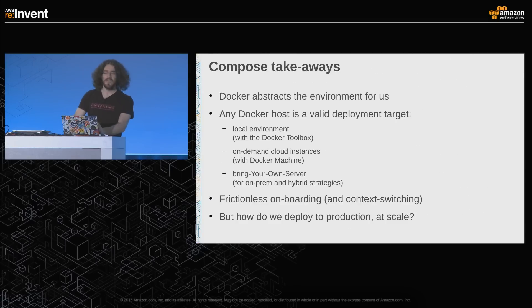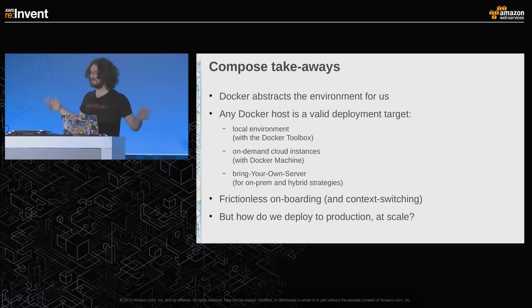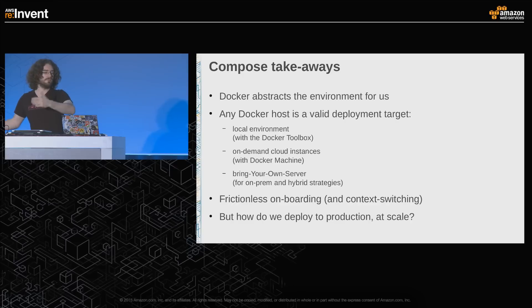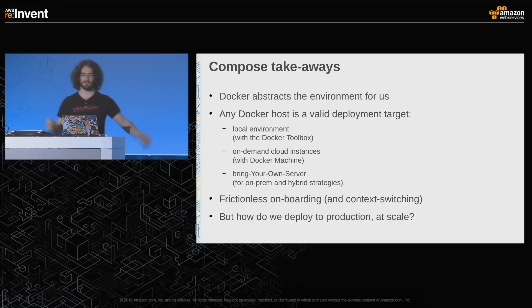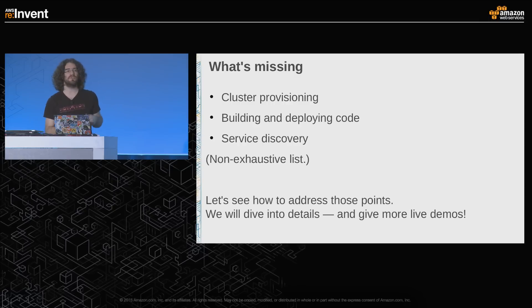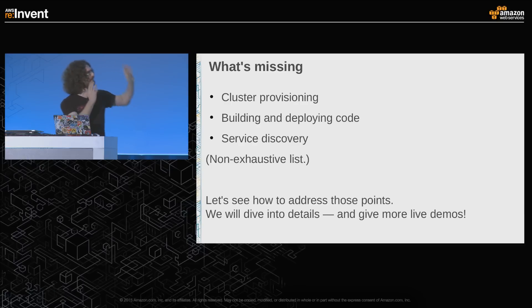Takeaways: Docker abstracts my dev environment, so I can deploy on a Mac, on my Linux machine, on an EC2 instance, on-prem, on a VirtualBox VM, on an OpenStack cluster, and obviously on EC2. It's super easy to onboard new people — when somebody joins the team, it's: here's your laptop, install Docker Toolbox, and you're set. But now how do I take that at scale, from one single VM to something bigger? We're missing something to provision the cluster, something to build and deploy code, and something to do service discovery.